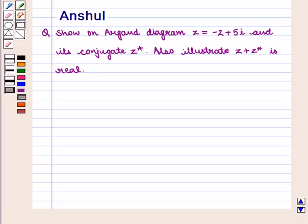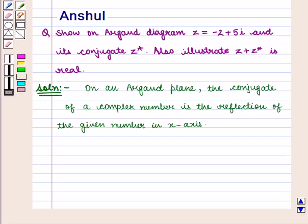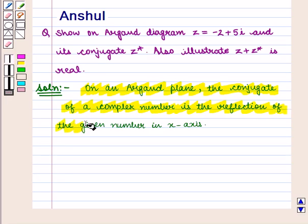Hello and welcome to the session. In this session we are going to discuss the following question: show on an Argand diagram the complex number z equal to minus 2 plus 5 iota and its conjugate z-star. Also illustrate that z plus z-star is real. Now let us start with the solution of this question.